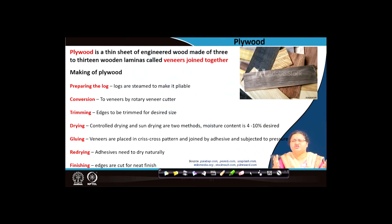Plywood usually comes in sheet form of 8 feet by 4 feet or 8 feet by 3 feet. When the sheets come out, the edges are to be trimmed and then placed for drying. Some drying is possible with abundance of land, otherwise controlled drying is used, and it is desired that moisture goes down to 4 to 10 percent. Next, each veneer is glued with application of adhesive in between. Once you are gluing one over the other, the criss-cross of the fibers or grains happens, which gives it more strength.